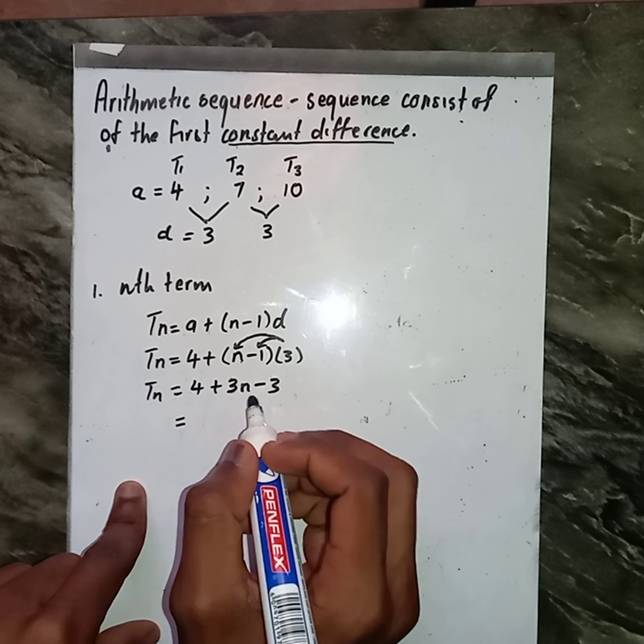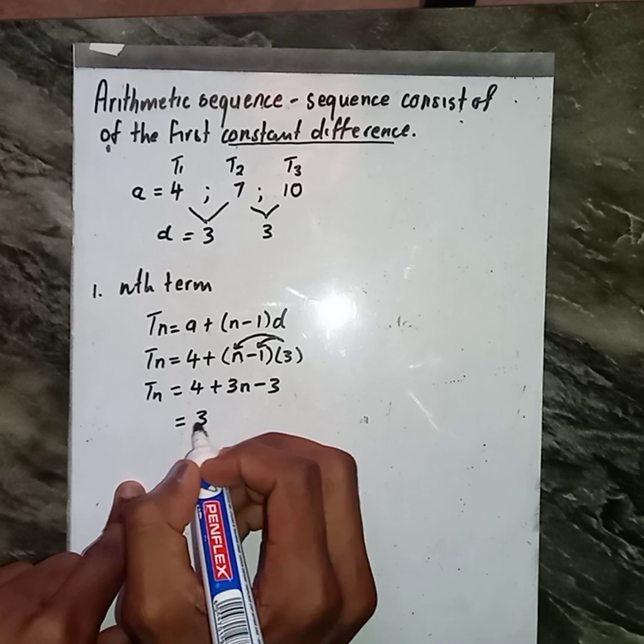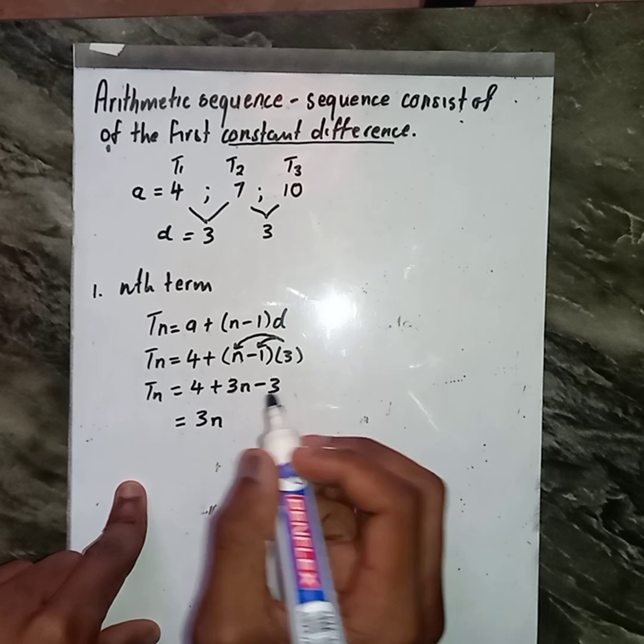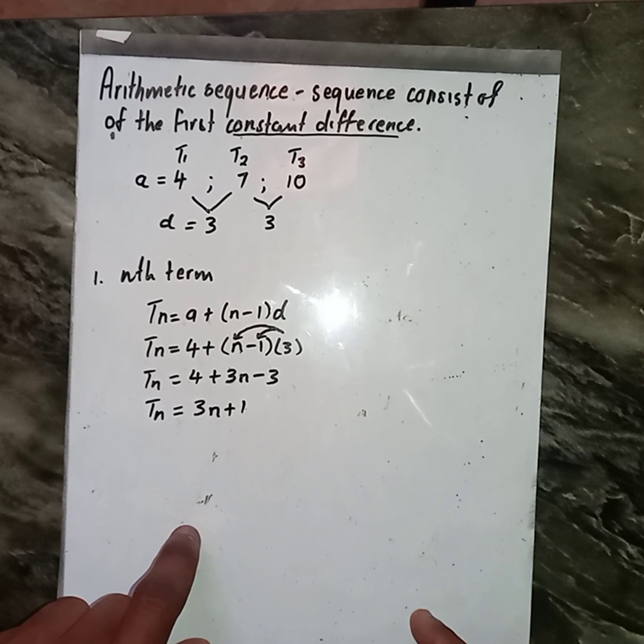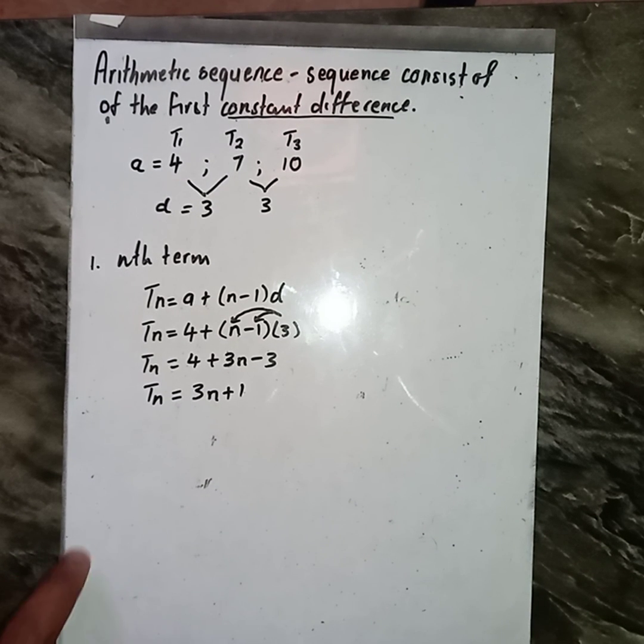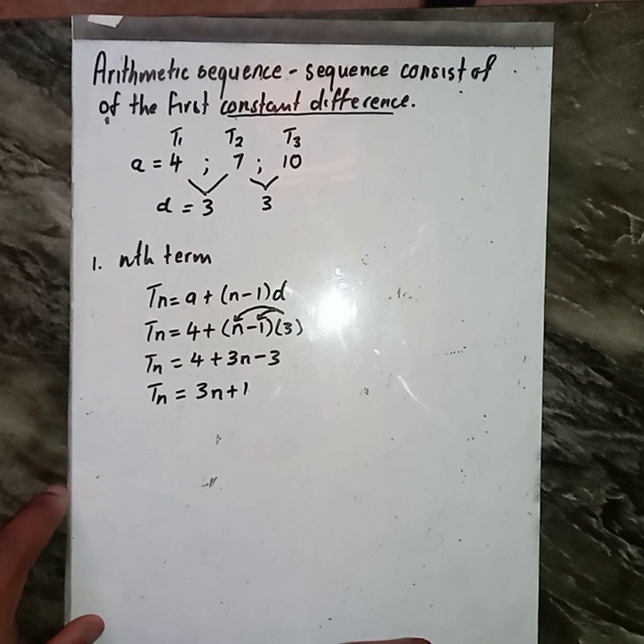If we further solve this, we are going to get 3n. 4 minus 3, we get plus 1. This is going to be our nth term.